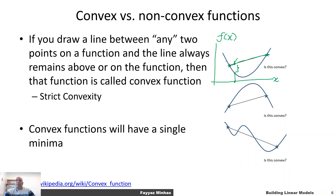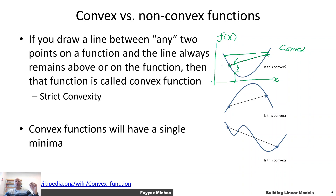For this blue function on the screen, if you take any line between any two points on this function, that line is always going to be on or above the function itself. If that is true for any line, then we call this function convex. So this blue function is a convex function, because any line between two points on it is either on or above the function.